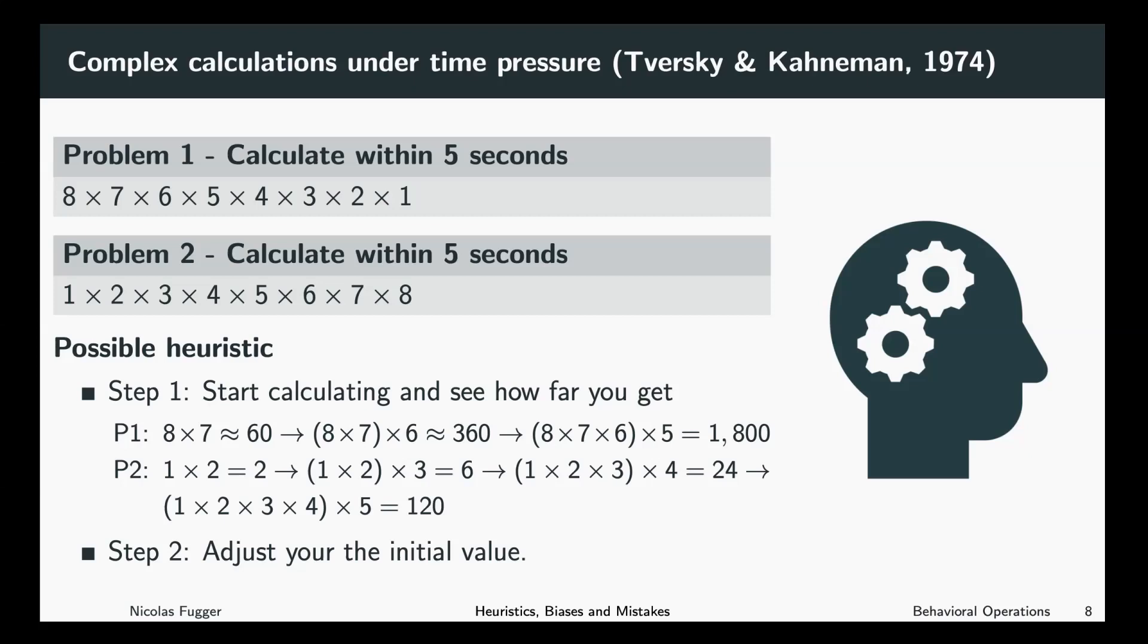In step one, you start calculating and you see how far you get. So if you are a participant in group one, you will start by multiplying 8×7 and you know the result is 56. It's easier probably to calculate further with an approximation, so let's say 8×6 is about 60. Maybe you will have the chance to do a step further, then you multiply this result with six and your value goes up to 360.